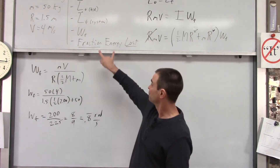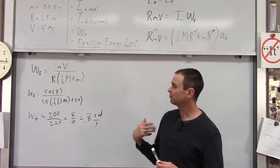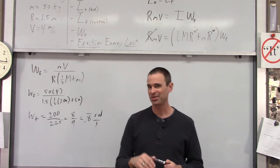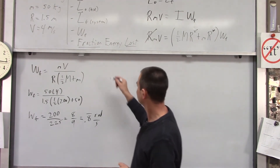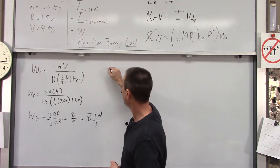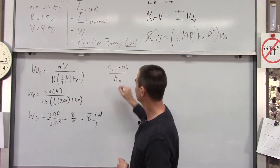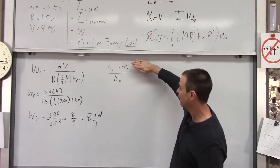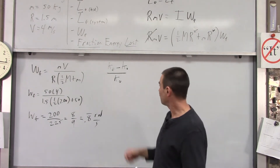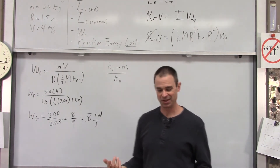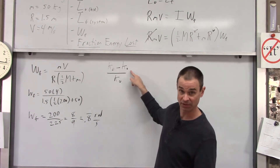The last question: what fraction of our energy was lost? We want the fraction lost, which equals (KE_final minus KE_initial) over KE_initial — the amount lost divided by the starting energy. The starting kinetic energy is simple: just the kid running, so it's one-half little m v-squared.